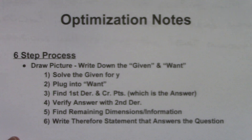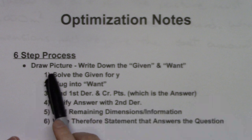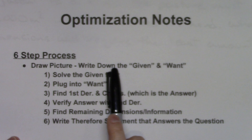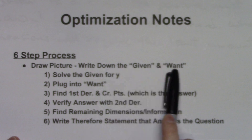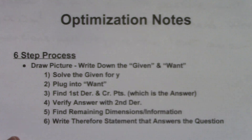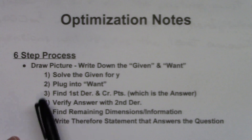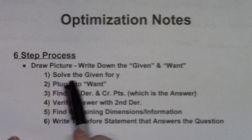Today I'm going to take a look at doing an optimization problem. I generally break my optimization problems down into six steps. You're always going to want to read your story problem, draw yourself a picture, write down the given, and figure out what you are hunting for. Then you're going to follow your six steps — these six steps will work for every optimization problem that you do.